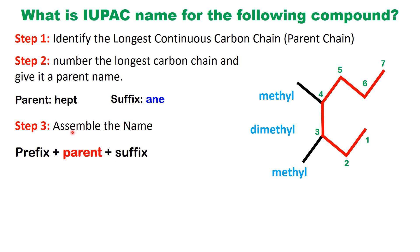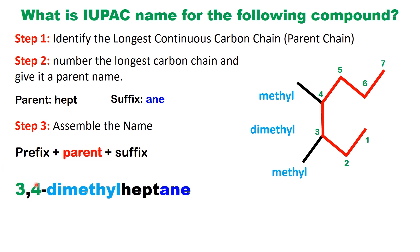Next, we combine all the parts. Start with the numbers showing the positions of the substituents, followed by the prefix, and finally the parent name. The substituents are located at positions 3 and 4. The prefix for two methyl groups is dimethyl. The parent name, based on the 7-carbon chain, is heptane. Put it all together into a single word, using commas to separate the numbers and hyphens to separate numbers from letters. The final name of the molecule is 3,4-dimethylheptane.